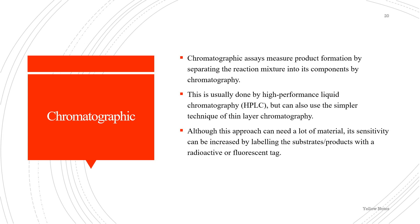Chromatographic assays measure product formation by separating the reaction mixture into its components by chromatography. This is usually done by high-performance liquid chromatography, but can also use the simpler technique of thin layer chromatography. Although this approach can require a lot of material, its sensitivity can be increased by labeling the substrate or product with a radioactive or fluorescent tag.